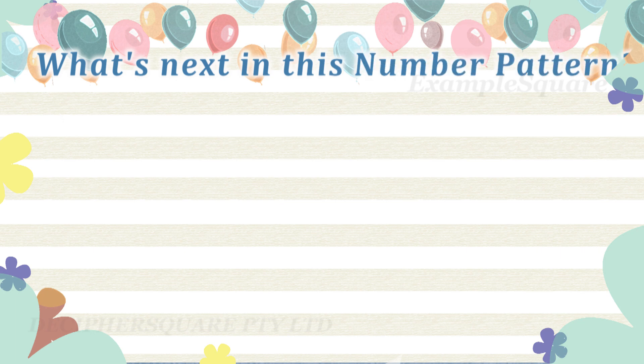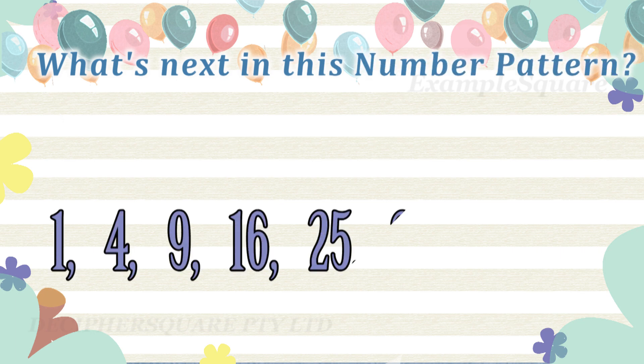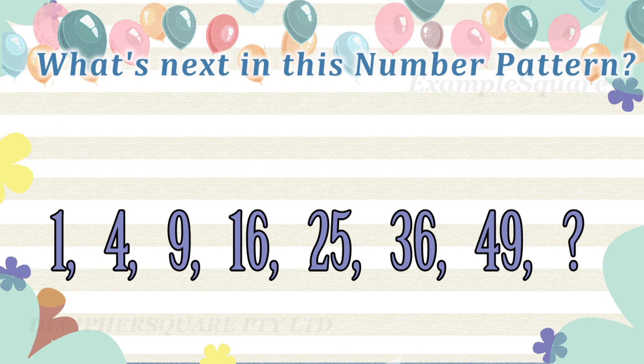What's next in this number pattern? Two approaches are considered here. It might be quite interesting to find out that the same set of numbers can be observed quite differently. One way to approach this is to simply observe that each number in the given pattern is a square of a number.